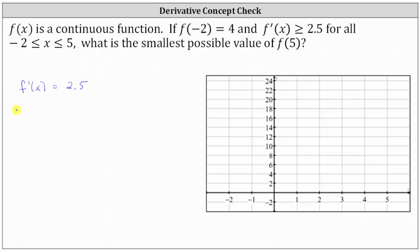Remember, slope is equal to the change in y divided by the change in x, which in our case would always be 2.5 over 1. We also know f of negative 2 is equal to 4, which indicates the point at negative 2 comma 4 is a point on the graph of f of x.